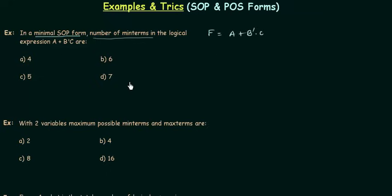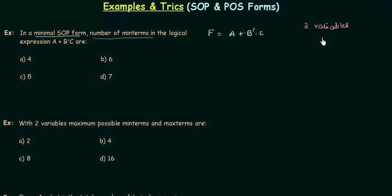We follow the same steps discussed in the last presentation. Step one: find the number of variables and their names. I can see there are three variables: A, B, and C.